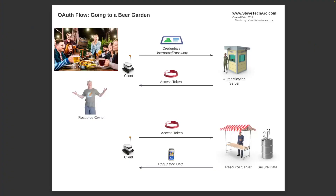In a previous video, I talked about being at a Beer Garden and wanting to get some beer, but when I tried to go to the resource server they said I don't have a wrist bracelet — an access token. So using my little secure robot, which is the client, I was directed to the authentication server where I gave my credentials. The authentication server validated them and provided me with a wrist bracelet and access token, which came back to me on a secure channel. I then went back to the resource server, presented the access token, and got the requested data.